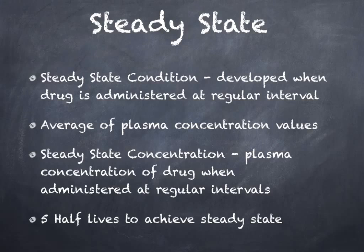Let's distinguish between steady state condition and steady state concentration. The steady state condition is something that develops when a drug is administered at regular doses and regular intervals. The steady state concentration is the blood plasma concentration of that drug when administered in such a fashion — once it has obtained that steady state condition. You can have a dose so high that it immediately gets your blood plasma to a concentration equivalent to the steady state concentration, but it won't be a true steady state concentration because you will not have achieved the steady state condition. Steady state condition has to be achieved over time, and it takes about five half-lives.